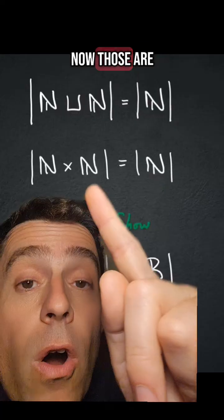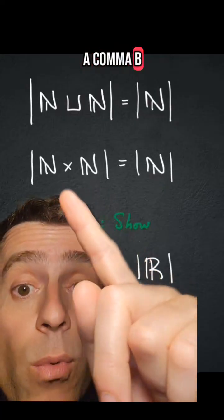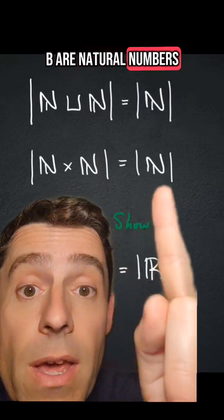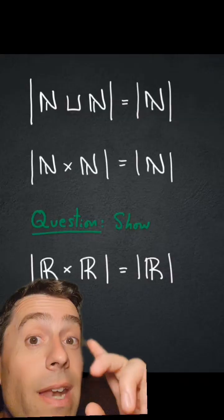So now those are pairs, A, B, where A and B are natural numbers. Prove that those two are in bijection.